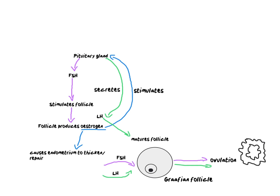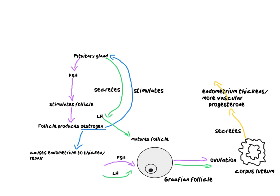After ovulation, we are left with the shrunken, empty follicle, which changes its name — it becomes the corpus luteum. The corpus luteum plays a really important role because it is the structure that secretes progesterone. Because the corpus luteum is secreting progesterone, we can now maintain the lining of the endometrium much better — we can make it more glandular, thicker, and more vascular.